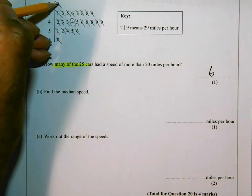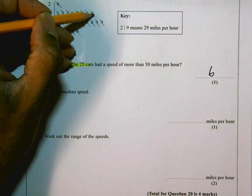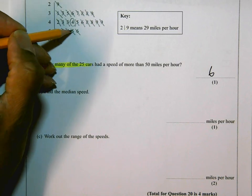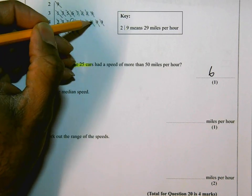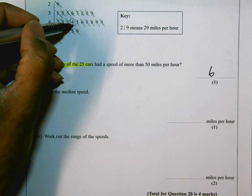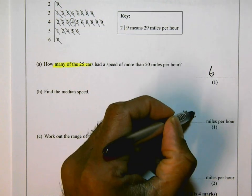I'm going to do a quick check to make sure that there were equal numbers on either side. So 1, 2, 3, 4, 5, 6, 7, 8, 9, 10, 11, 12. 1, 2, 3, 4, 5, 6, 7, 8, 9, 10, 11, 12. Yep. So that 4 is bang on in the center. I don't write 4 there. That 4 stands for 44. And so that's the median speed. 44.